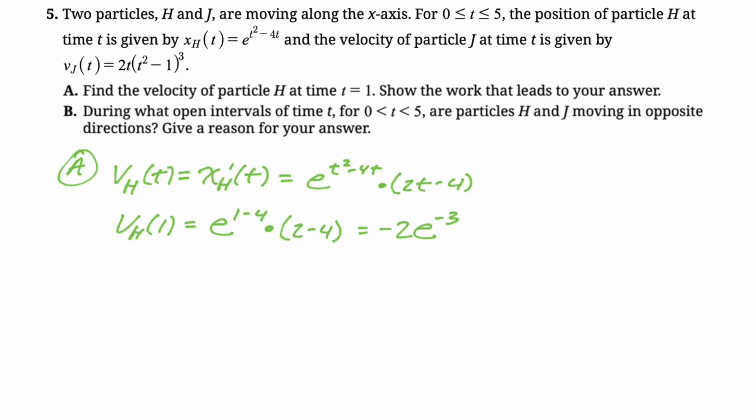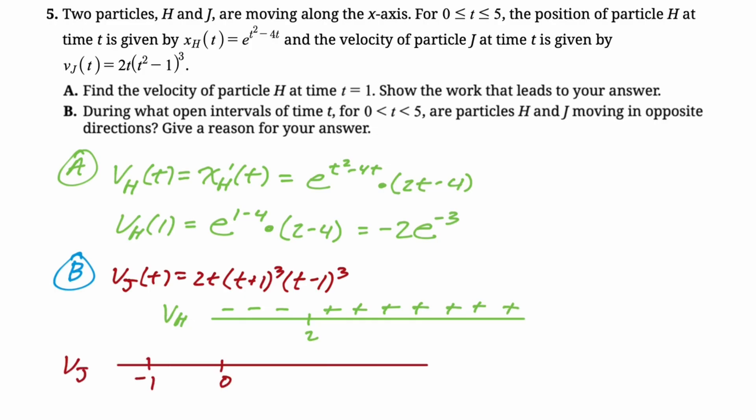During what open intervals of time t between 0 and 5 are the particles H and J moving in opposite directions? Give a reason for your answer. So we're going to need the velocity of J. It's kind of written in a form that I don't really like because it's not completely factored. t²-1 is really (t+1)(t-1), and then we're cubing it. So we've got v_J(t) is going to be 2t, and then I'm going to do (t+1)³ and (t-1)³. So now I can make a sign chart for that. I also need a sign chart for v_H. 2 is the only 0 for the velocity of H, because e^(t²-4t) is never equal to 0. So we can just fill in our sign chart for v_H. It only changes sign at 2, and you go negative to positive there.